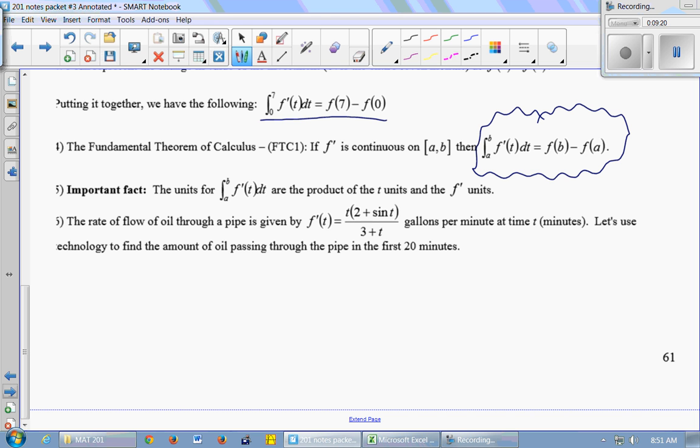So important fact, the units on the integral of f'(t)dt are the product of the t units and the f' units. Because we're calculating this integral by taking an area under the curve. f'(t) represents the height of a rectangle, and dt represents the width of your rectangle. So if you take the f' units times the t units and multiply them, you get the units of the area of that rectangle. So the integral has units, t units times f' units.